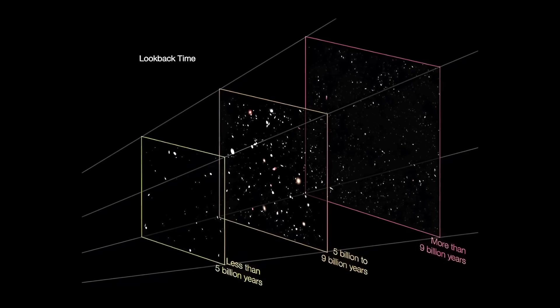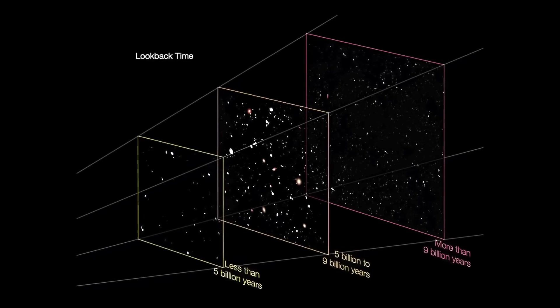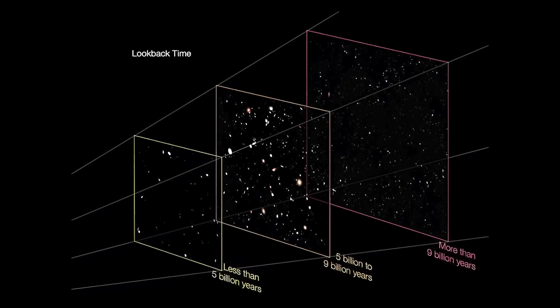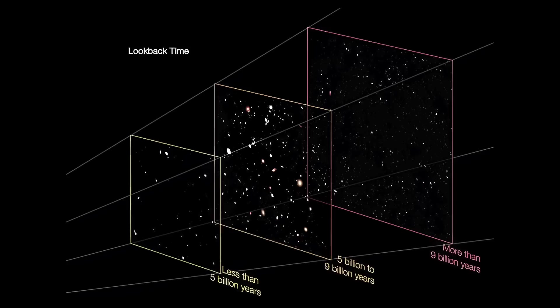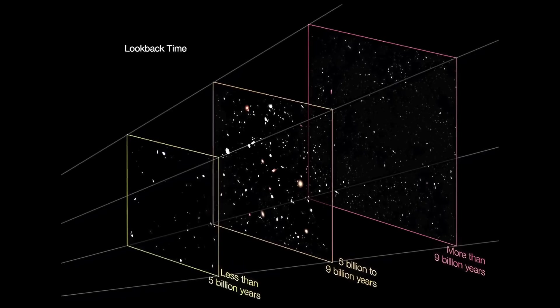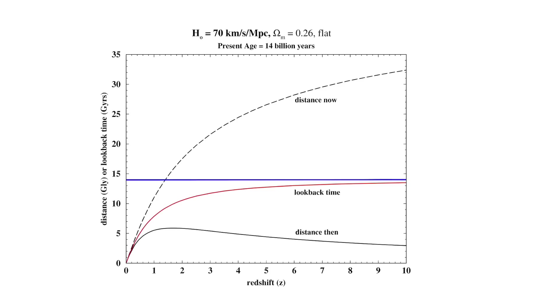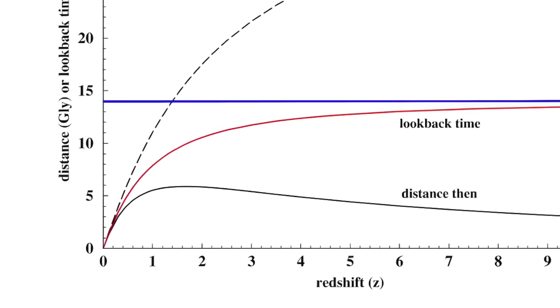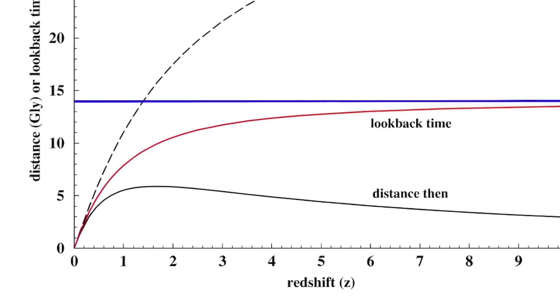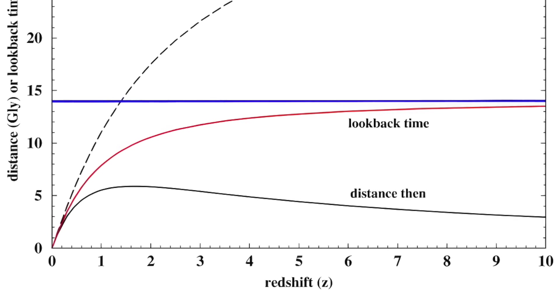The time that has elapsed since the light was emitted is referred to as the look-back time, or light travel time, and is the value that is most commonly used to describe the distance of high redshift objects. That is what is shown on the y-axis of the graph. Notice the declining slope of the distance then line in this graph beyond a redshift of about 3.